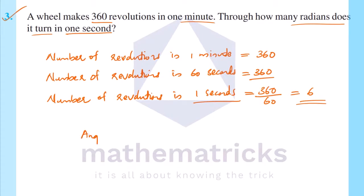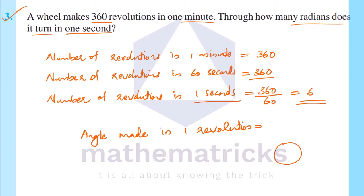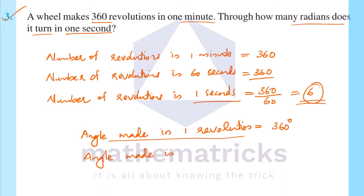The angle made in one revolution is 360 degrees. You can form a full circle with 360 degrees. So the angle made in 6 revolutions is equal to 6×360 degrees.